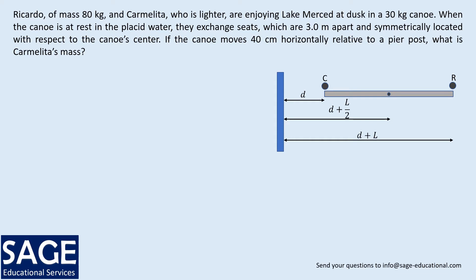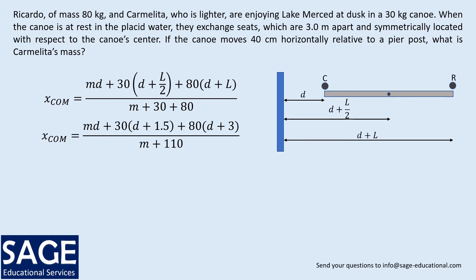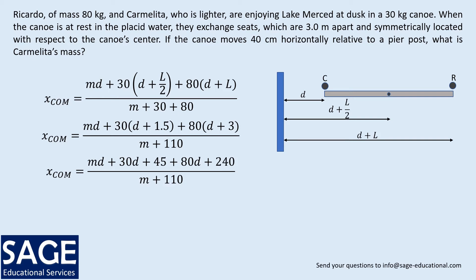So here we have our distances. Now we can find an expression for the center of mass of the system. The center of mass equals the mass of Carmelita, which we do not know, times her distance d, plus the mass of the boat which is 30 kilograms times its distance d plus l over 2, plus the mass of Ricardo which is 80 kilograms times his distance d plus l, all divided by the sum of the masses. Substituting l equals 3.0 meters and simplifying gives: center of mass equals md plus 110d plus 285, over m plus 110. We'll need this expression later.